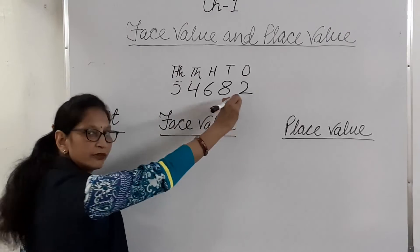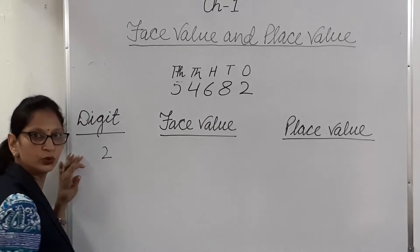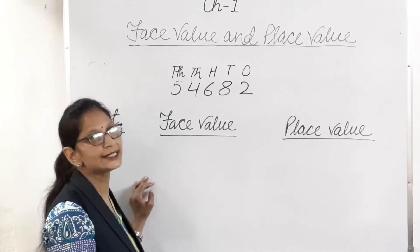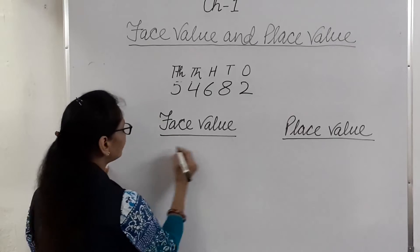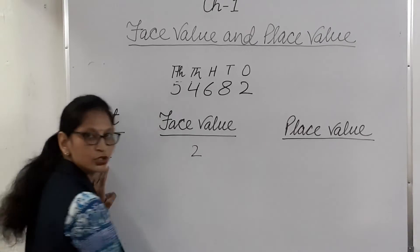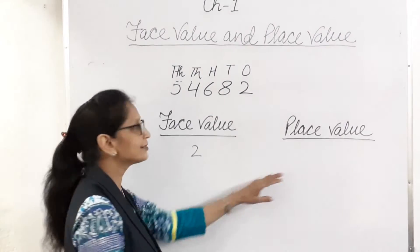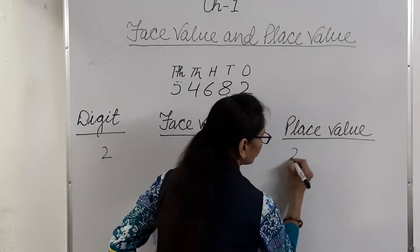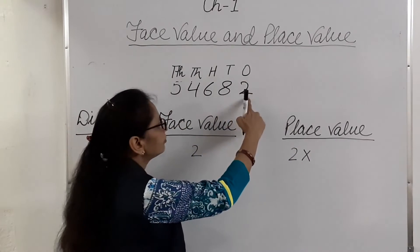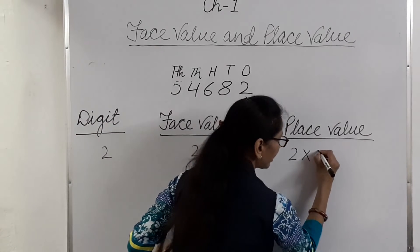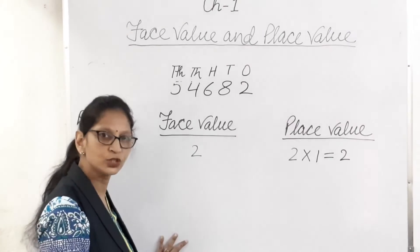First digit is 2. What is the face value of 2? Face value means the digit itself — that means the same number. So face value of 2 is 2. And place value of 2 is 2 multiplied by the place where it is put. 2 is in the ones place. So 2 multiplied by 1 equals 2. Place value of 2 is 2.